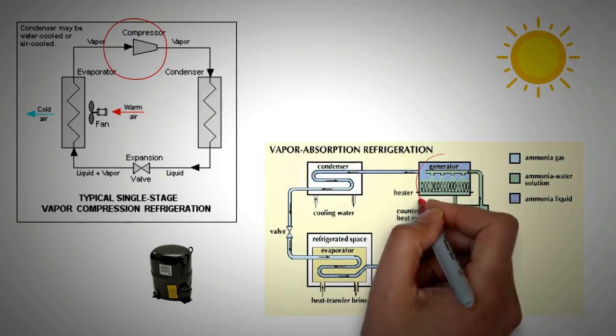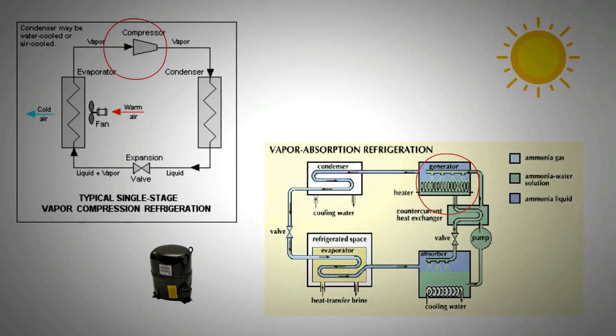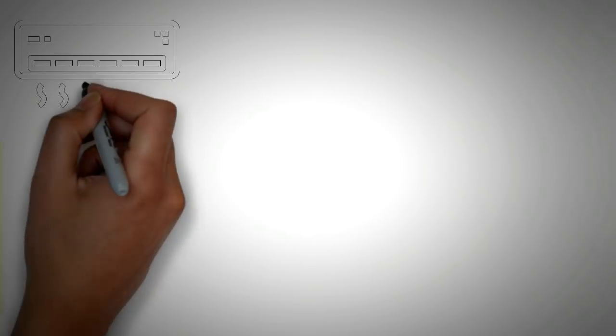Similarly, in an absorption cycle, heat is required to evaporate refrigerant. Again, solar energy can be used for this purpose. To sum up, solar thermal energy can be used directly to reduce energy consumption of air conditioners.